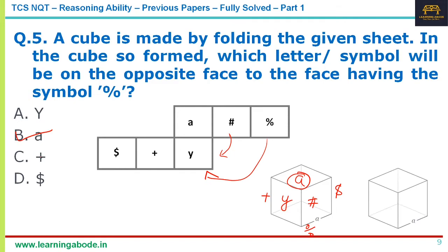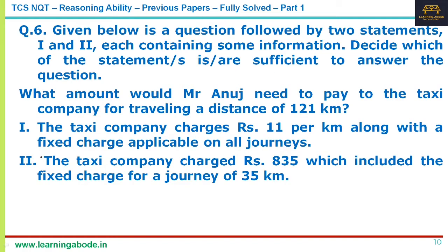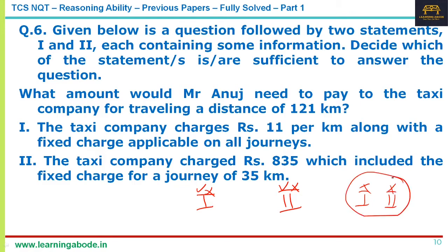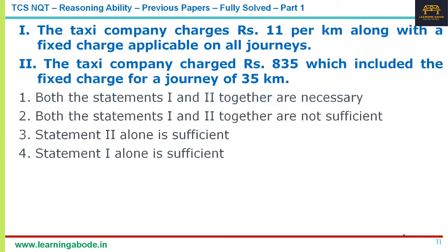Question 6 is a data sufficiency question. You don't answer the question itself — you check whether the given data is sufficient. Consider Statement 1 alone, then Statement 2 alone, then combine them if needed. The possible outcomes are: Statement 1 alone sufficient, Statement 2 alone sufficient, both together necessary, or even together not sufficient.